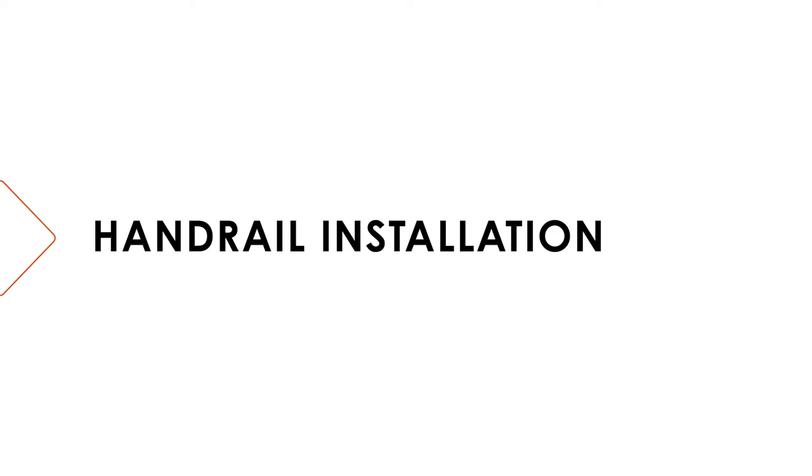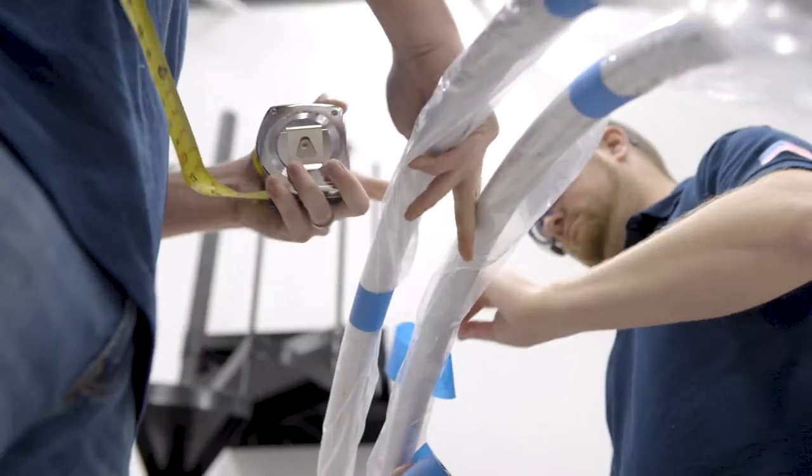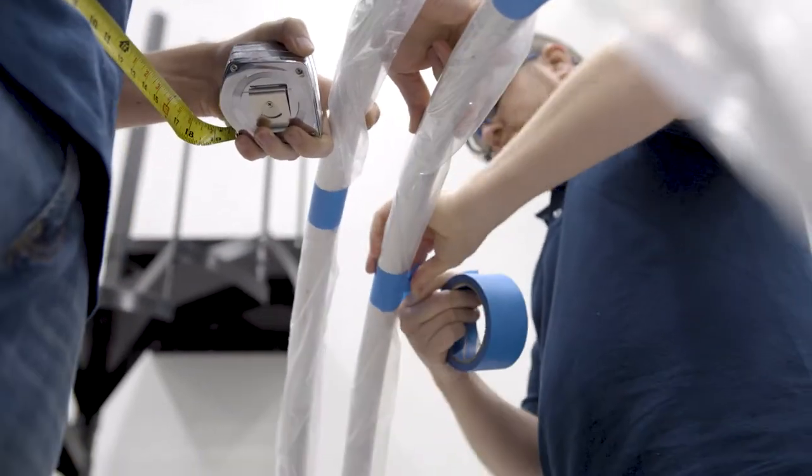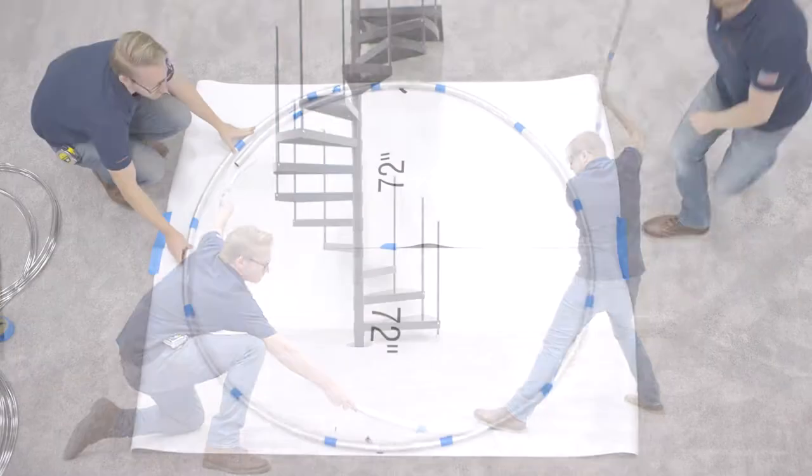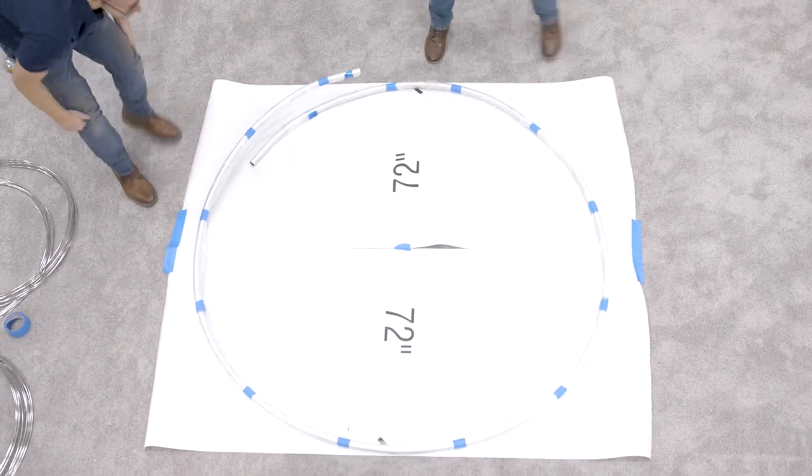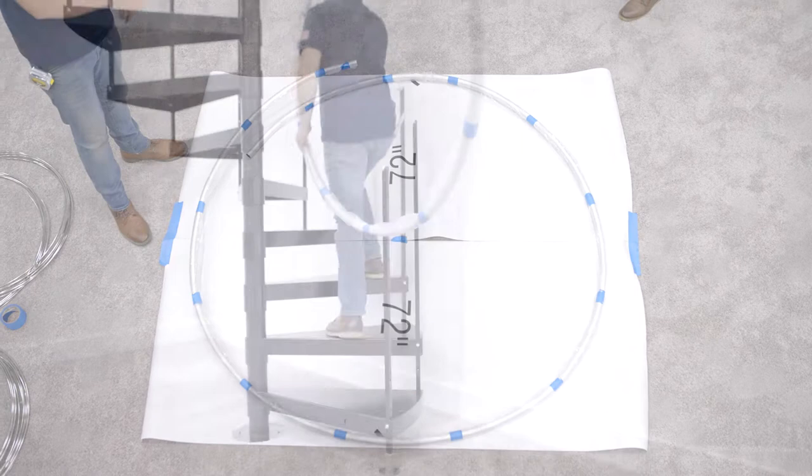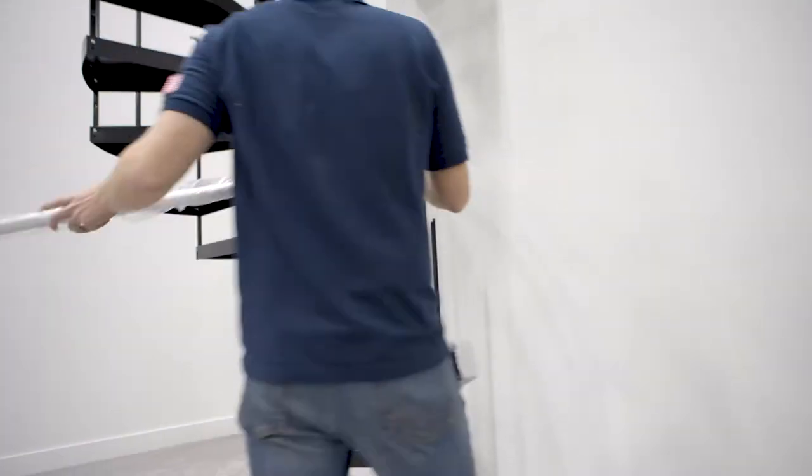The handrail installation will take approximately three hours. The installation process for the staircase's handrails will differ depending on the material you have selected. This instructional video will demonstrate the process for metal handrails, either aluminum or brass only.